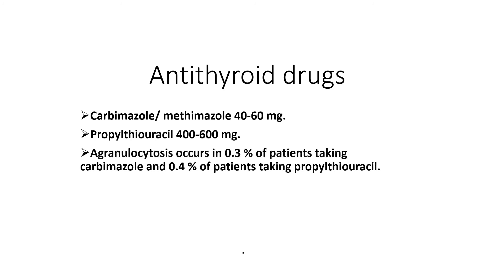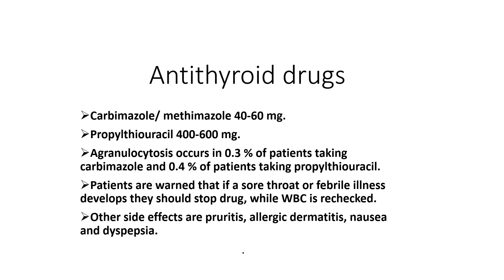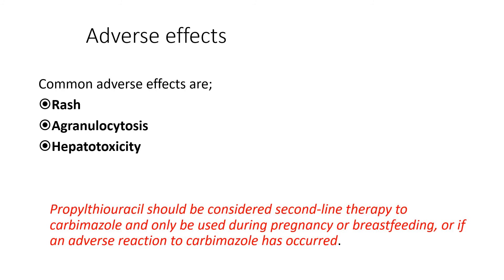Agranulocytosis occurs in 0.3% of patients taking carbamazole and 0.4% taking propylthiouracil. It is a rare but important side effect — patients on antithyroid drugs presenting with sore throat must be investigated for agranulocytosis. Patients are warned that if sore throat or febrile illness develops, they should stop the drug while a CBC is rechecked. Other side effects include pruritus, allergy, dermatitis, nausea, and dysphagia.